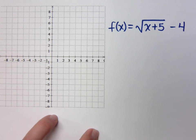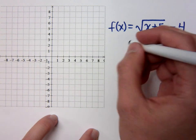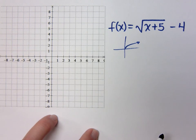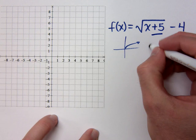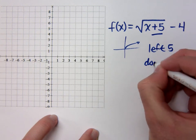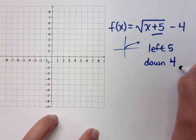What's the shape? It's that little half parabola guy. So we know the basic shape is this guy right here. What am I doing with this shape? Going down 4 to the left 5. So the inside here means I'm going to the left 5 and then I'm going down 4.